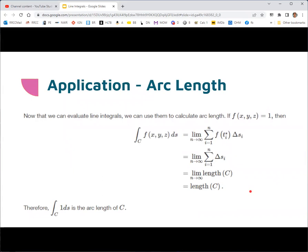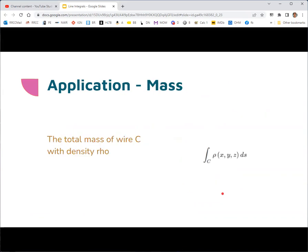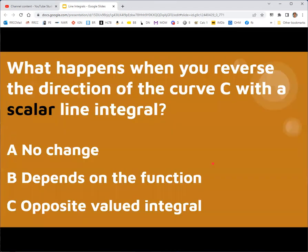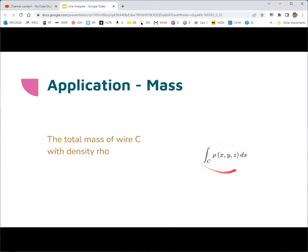Here's the official theorem that states what we just derived. An application of this is that you can use it to find arc length. In this case, you'll just let the function itself be one, and then this integral gives you the length of the curve. Another application is that we can find the mass of an object like a thin wire. So if you have a thin wire and the density is rho, which is a function of x, y, and z, and it's changing along some curve C, then we could integrate that density and find the total mass of the wire.